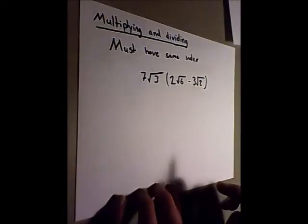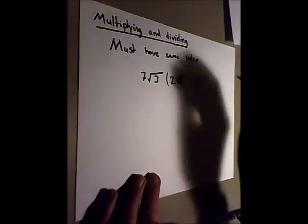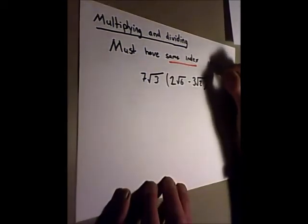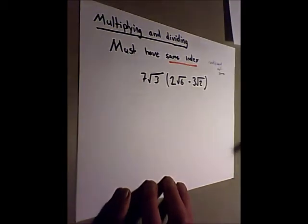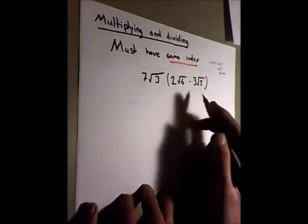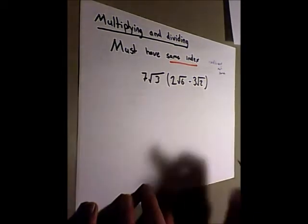When we multiply and divide, we need to make sure that they have the same index, but the radicand does not have to be the same. So here we simply just multiply it in like we would any equation.